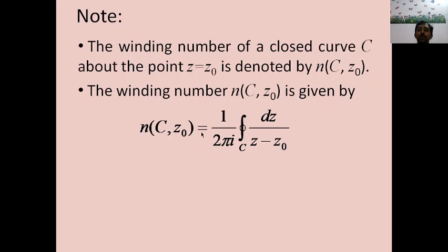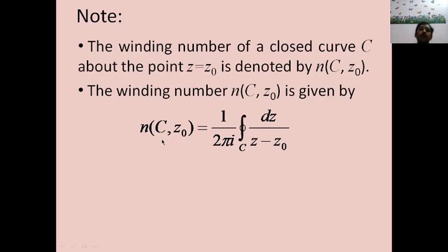This is how we find the winding number of a curve C about a point z = z₀ without actually drawing the curve and counting traversals. You evaluate the integral of 1/(z − z₀) dz around the curve C and multiply by 1/(2πi), and that number gives you the winding number. This formula will be used frequently. We will now discuss one or two problems where we find the winding number of a particular curve about a particular point.